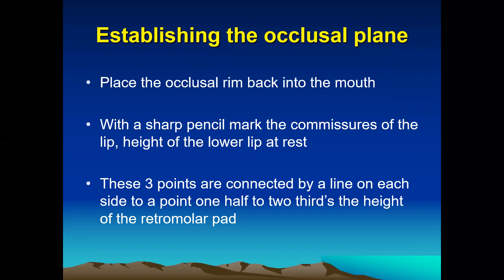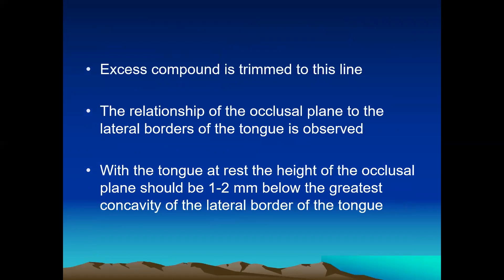Now, coming to establishing the occlusal plane. We place the occlusal rim back into the patient's mouth. With a sharp lead pencil, mark the commissures of the lip and height of the lower lip at rest. These three points are connected by a line on each side to a point one-half to two-thirds of the height of the retromolar pad, which is the posterior reference point for the lower occlusal rim. The excess impression compound is trimmed so that this line is established. The main criteria is that with the tongue at rest, the height of the lower occlusal plane should be one to two mm below the greatest concavity of the lateral border of the tongue.